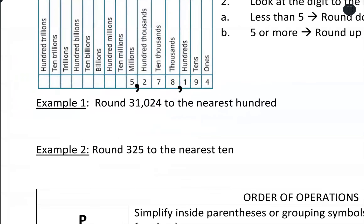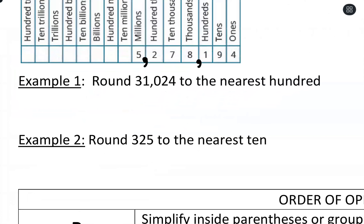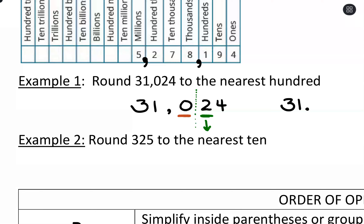Let's try that out. For this first example, we're going to round 31,024 to the nearest hundred. Our rounding place value is in the hundreds place, and I like to draw a little line there because across that line I look at the digit to the right, and that digit tells me whether we round up or down. Because it's a two, it's less than five, so we're rounding down. That zero stays a zero, and everything else turns into zeros. So 31,024 rounds down to 31,000.